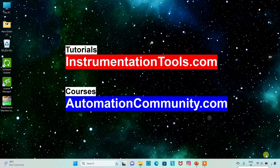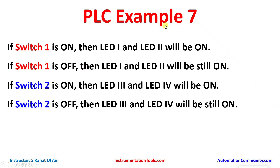We will look at Example 7 first. If switch 1 is on, then LED 1 and LED 2 will be on. If switch 1 is off, then LED 1 and LED 2 will still be on. If switch 2 is on, then LED 3 and LED 4 will be on, and if switch 2 is off, then LED 3 and LED 4 will still be on. Here we will use two memory bits and implement latching.